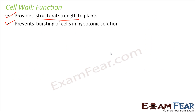Let us quickly look at the function of the cell wall. It is present specifically in plant cells to provide structural strength to the plants. Why do plants need special structural strength? One reason is that plants are immobile — they cannot protect themselves against adverse conditions. For example, human beings and other animals are capable of moving from one place to another.